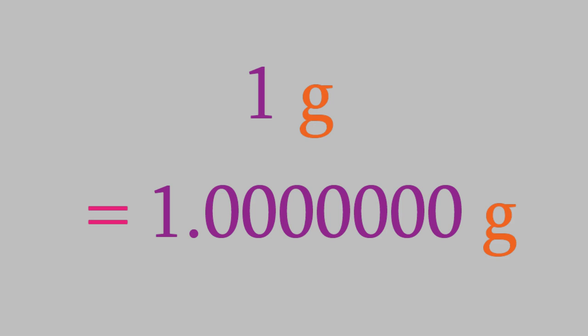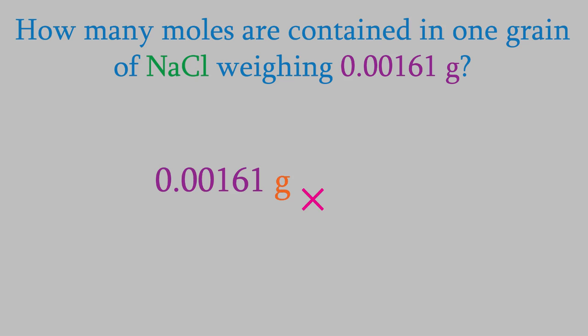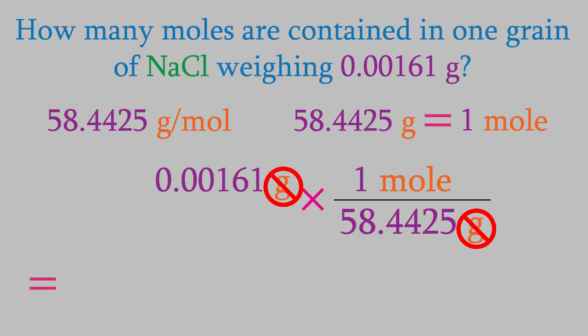Now let's try another problem. Suppose we have a grain of salt weighing 0.00161 grams. How many moles is that? To answer that question, we need another conversion factor. Remember, we saw earlier that NaCl weighs 58.4425 grams per mole. So our conversion factor will be a fraction with 58.4425 grams on one side and one mole on the other side. The important thing to get right is which number goes in the numerator and which goes in the denominator. Remember, we want our answer to be in moles, so we want grams to cancel out. Since grams is in the numerator in the first number, we want it to be in the denominator of our fraction. That means our answer is 2.7548445 times 10 to the minus 5 moles.